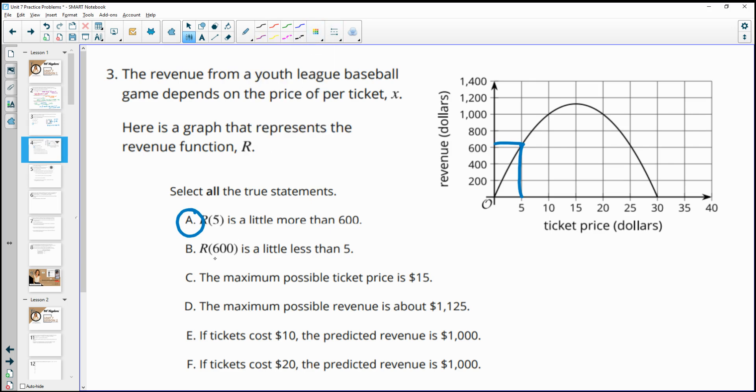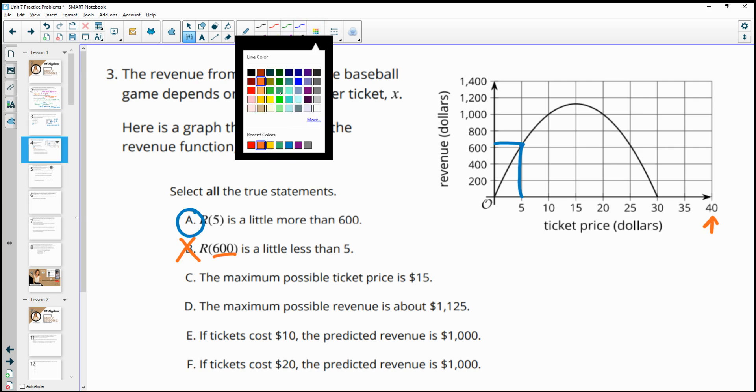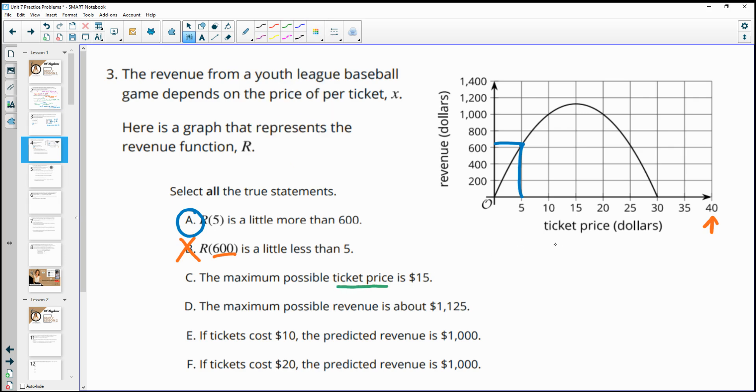B, R of 600 is a little less than 5. Well, 600 isn't on here. It stops at 40, so this is not true. We do not see any data about ticket prices being 600. The max possible ticket price is $15. Well, here's ticket prices. We go up to $30 here. So that is not true. The max ticket price is not $15.